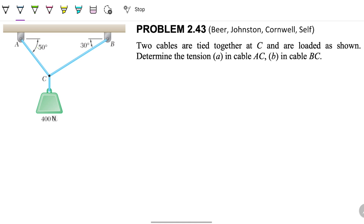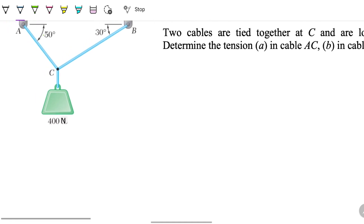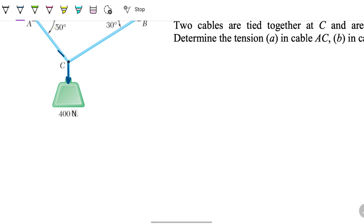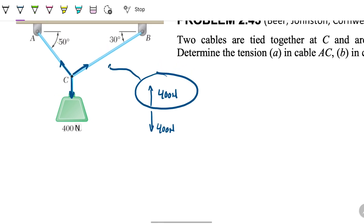The problem statement reads: Two cables are tied together at C and are loaded as shown. Determine the tension in cable AC and in cable BC. So the idea is we have this cable pulling it down, and because it's still not moving, there should be two components here making it stop.